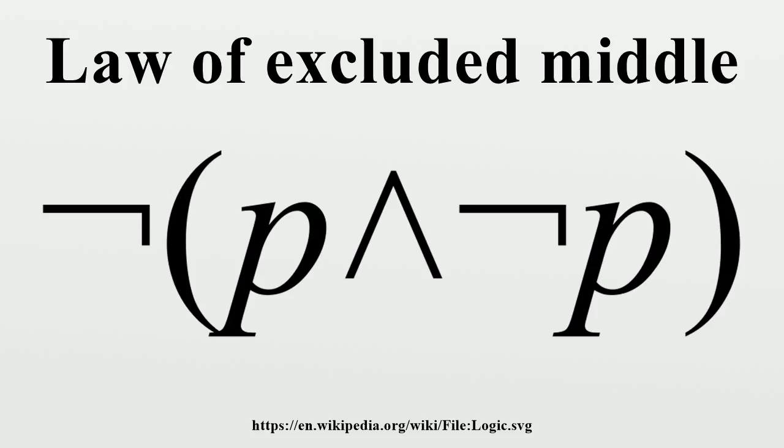An example of an argument that depends on the law of excluded middle follows. We seek to prove that there exist two irrational numbers and such that is rational. It is known that is irrational. Consider the number. Clearly this number is either rational or irrational. If it is rational, the proof is complete, and an but if is irrational, then let an then, and two is certainly rational. This concludes the proof.